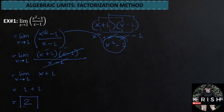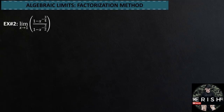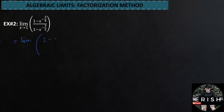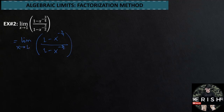Our final value is equal to 2, and this is the answer for example number 1. Example number 2: the limit of 1 minus x raised to negative 3 fourths over 1 minus x raised to negative 3 halves as x approaches 1. What will we factorize here? In this problem, what we will factorize is the denominator.